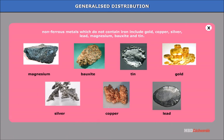Non-ferrous metals, which do not contain iron, include gold, copper, silver, lead, magnesium, bauxite, and tin.